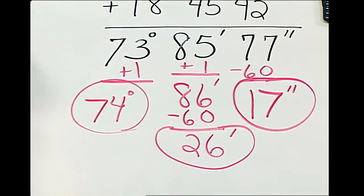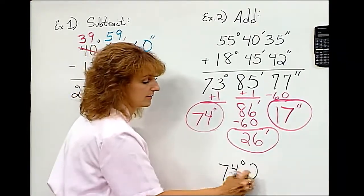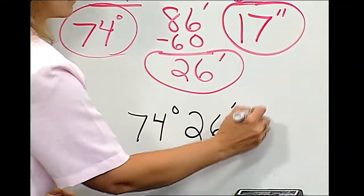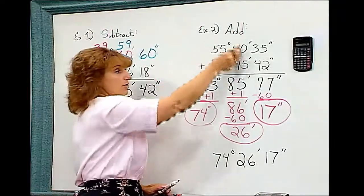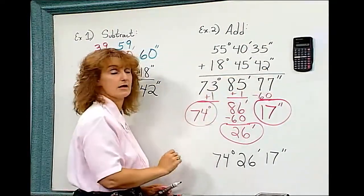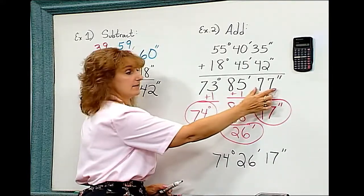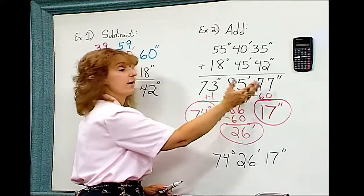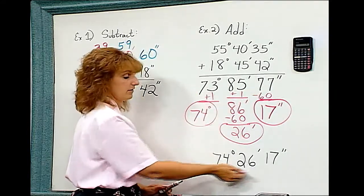So my final answer when I add these is 74 degrees, 26 minutes, 17 seconds. So when you add, you're also going to line up your columns. But if any of your columns come out to be over 60 in the seconds or minutes, you have to simplify your answer until you get what we have here.